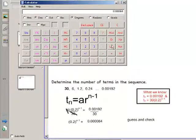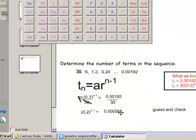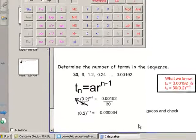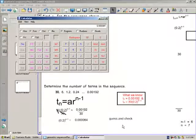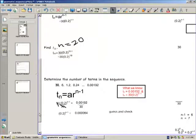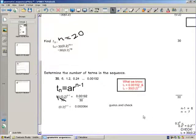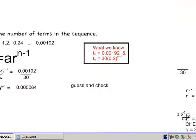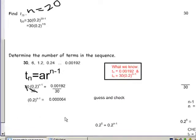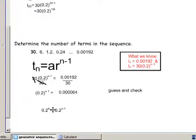So I now know that this value 0.0000064 is in actual fact 0.2 to the exponent 6. So I am going to set up that equation. I am now saying that my 0.2 to the n minus 1 is in actual fact equal to 0.2 to the exponent 6.